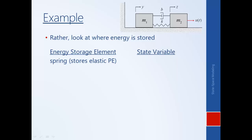The amount of energy stored in the spring is determined by its deformation. If we assume that y and z are zero when the spring is at rest, then the deformation is determined by the difference in the motion of each end of the spring — i.e. the difference between y and z. So our first state variable, X1 = y − z, captures how much energy is stored in the spring.